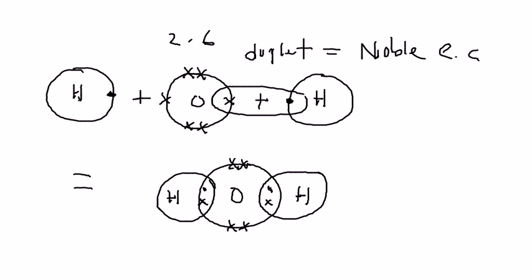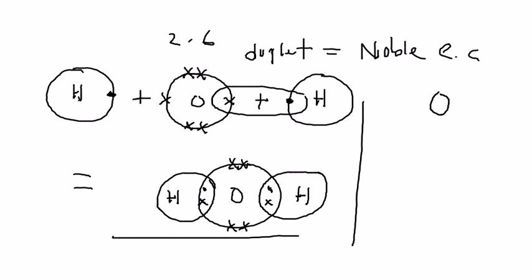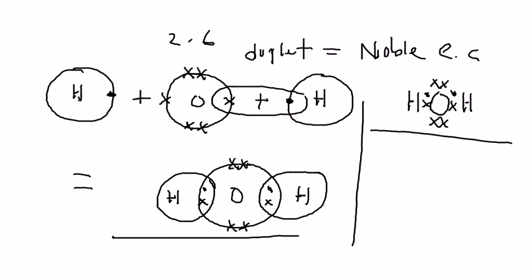That's what you will see in the dot-and-cross diagram. Another way to draw the dot-and-cross diagram: you draw your oxygen atom in the center, place the six outer electrons using crosses, then share with one electron from hydrogen on one side and another hydrogen on the other side. This is also another valid form of the dot-and-cross diagram.